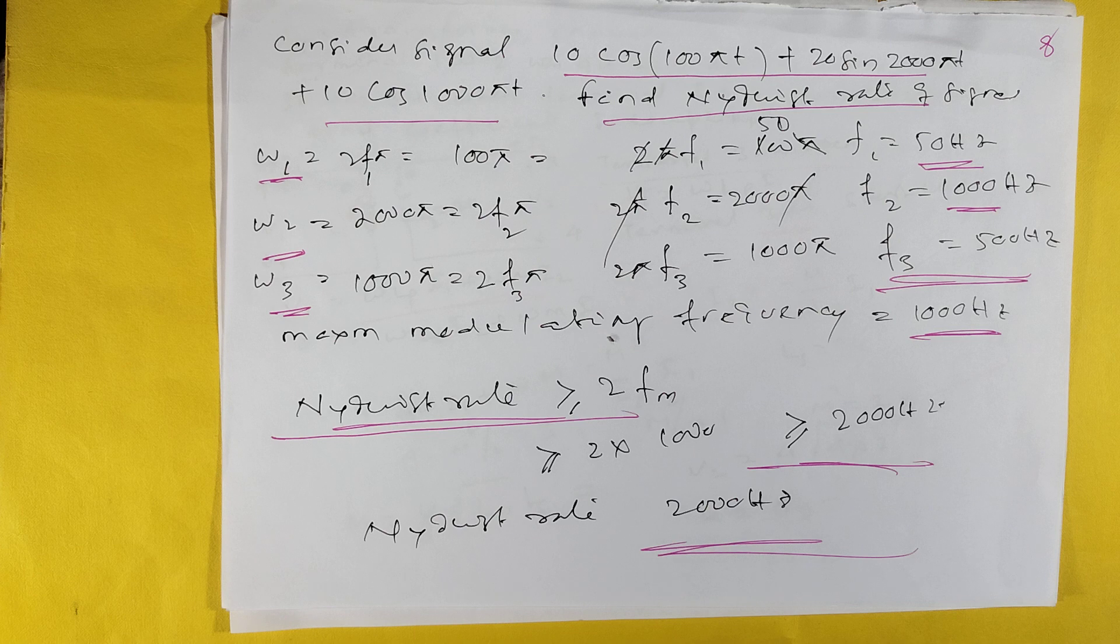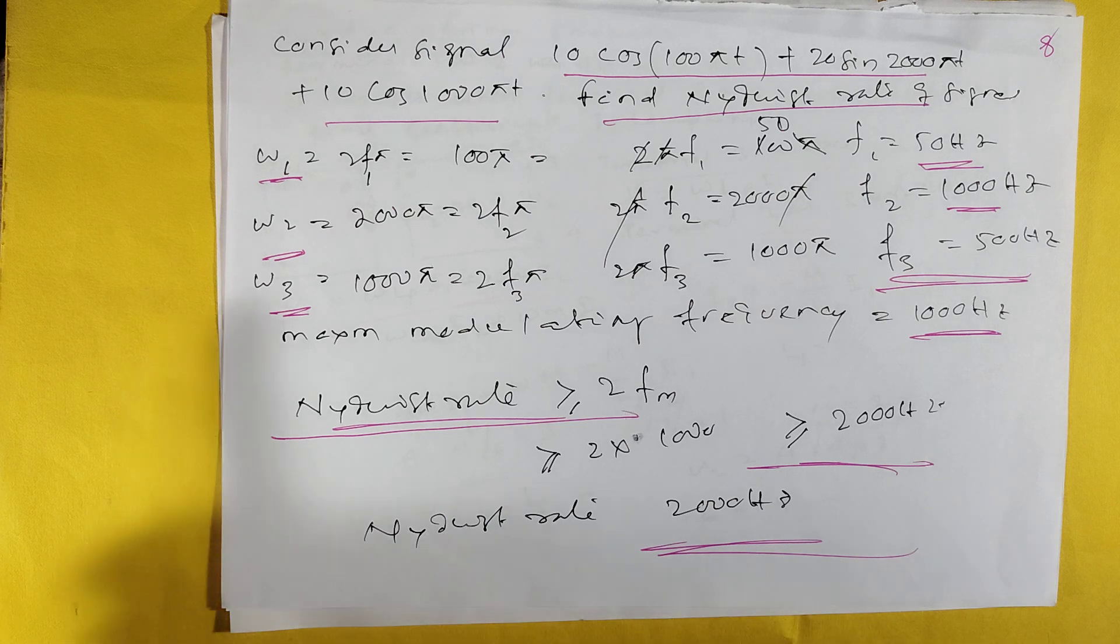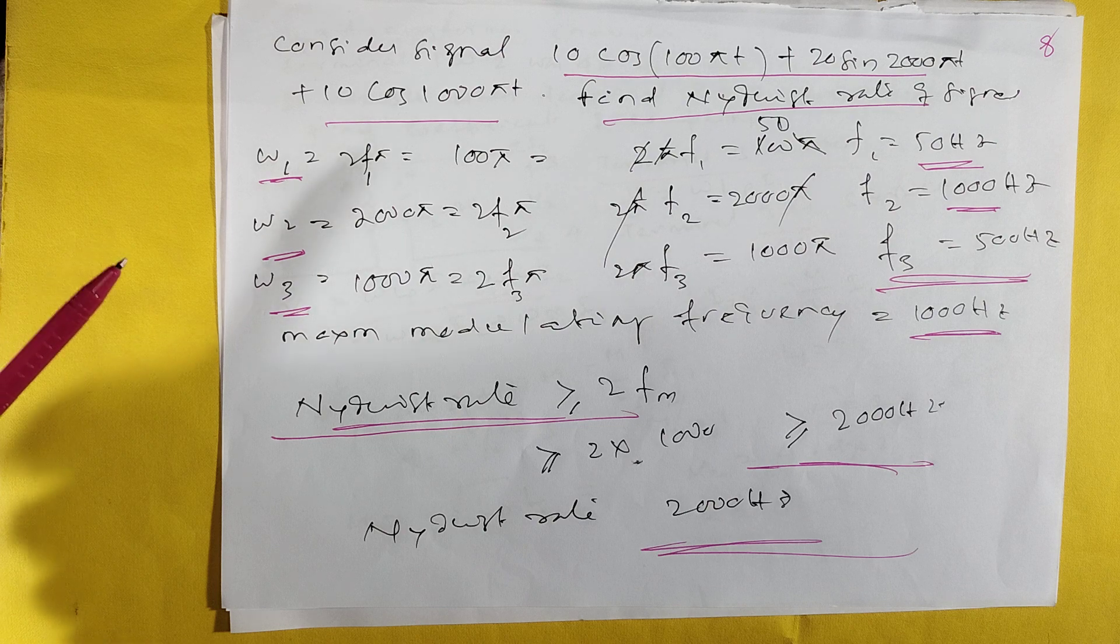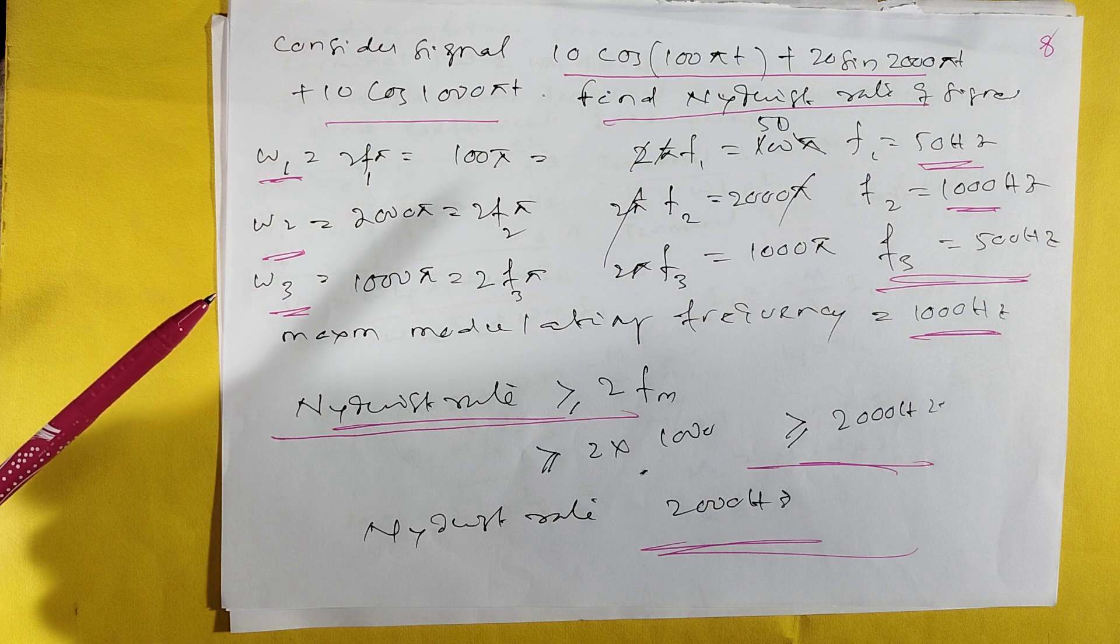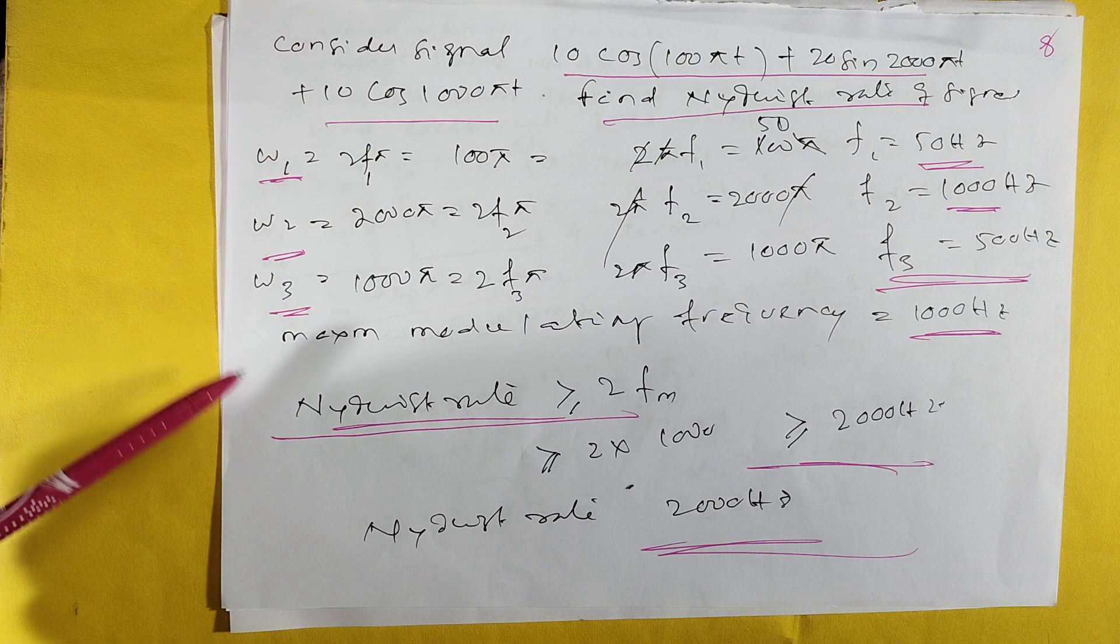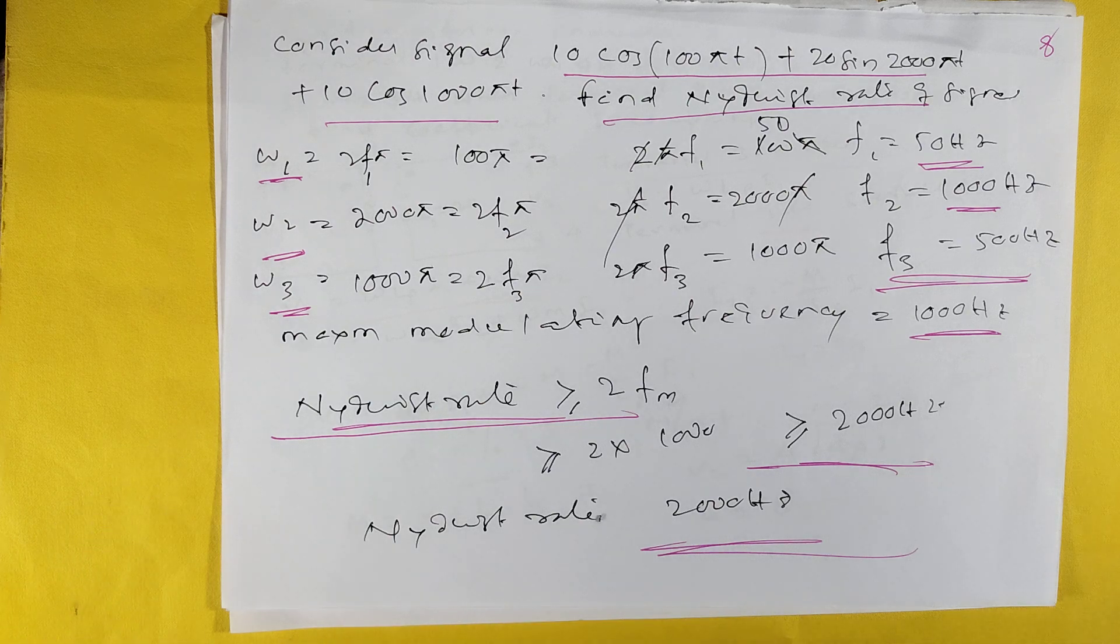A signal: 10 cos(100πt) + 20 sin(200πt) + 10 cos(1000πt). Find Nyquist rate. In first case f1 = 50 Hz, second case f2 = 100 Hz, third case f3 = 500 Hz. Maximum frequency is 500 Hz. Nyquist rate = 2 × maximum = 1000 Hz.